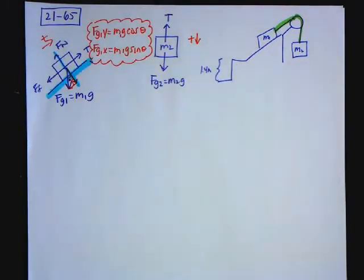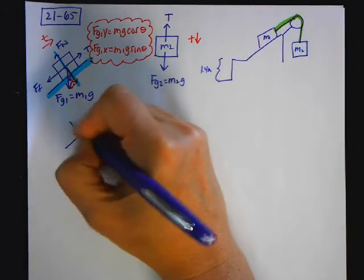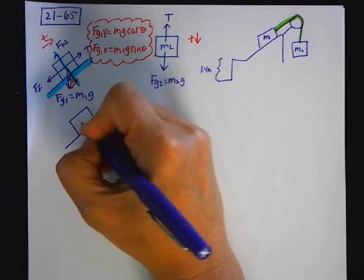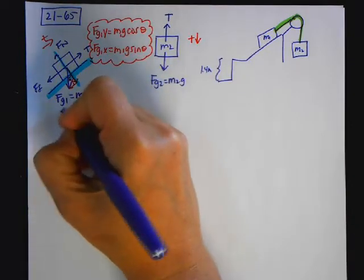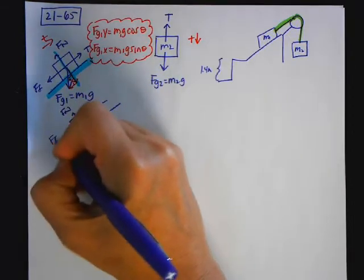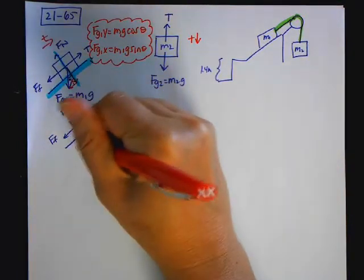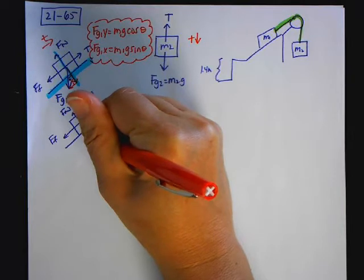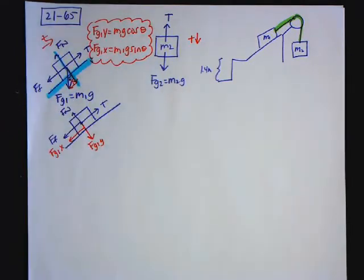Now when I redraw this, I have my tension, which I haven't touched, my normal force, which I haven't touched, my frictional force. But instead of the weight, I'm going to replace it now here with FG1Y and FG1X. So it's very important when I'm doing the components to make sure that they're going in the correct direction.